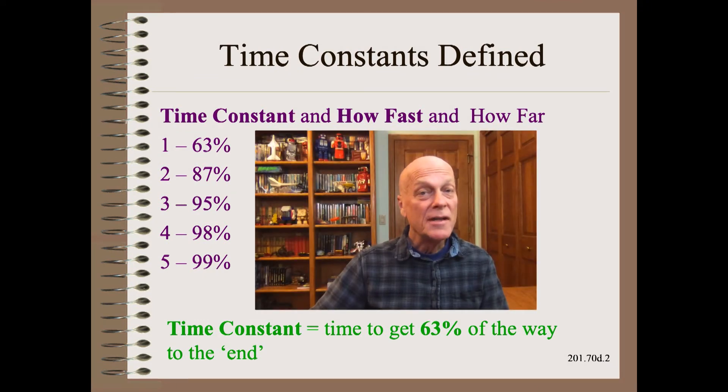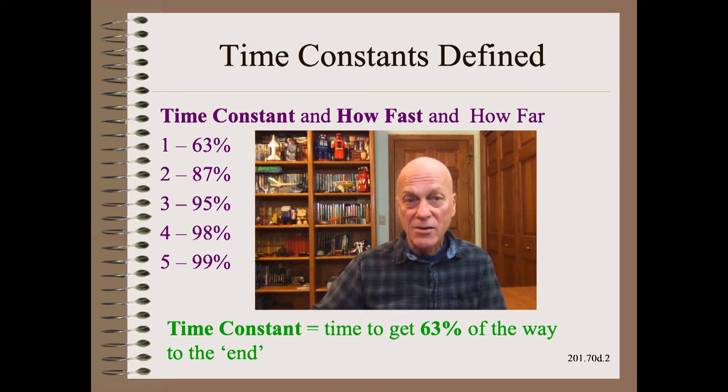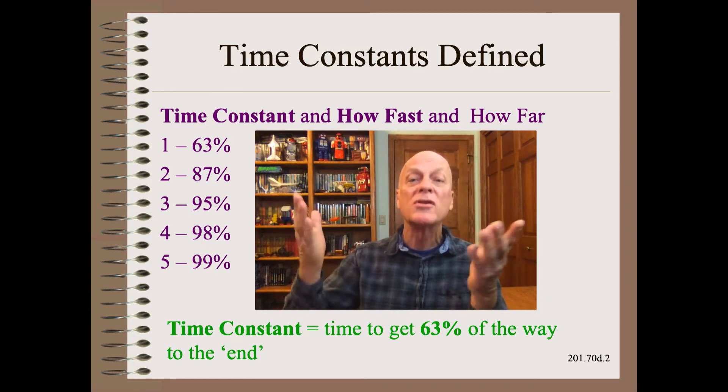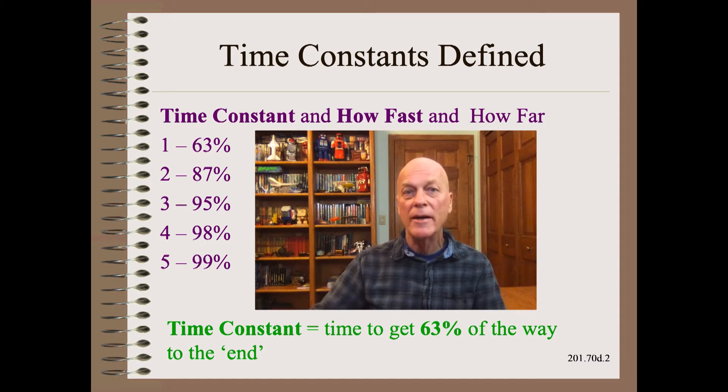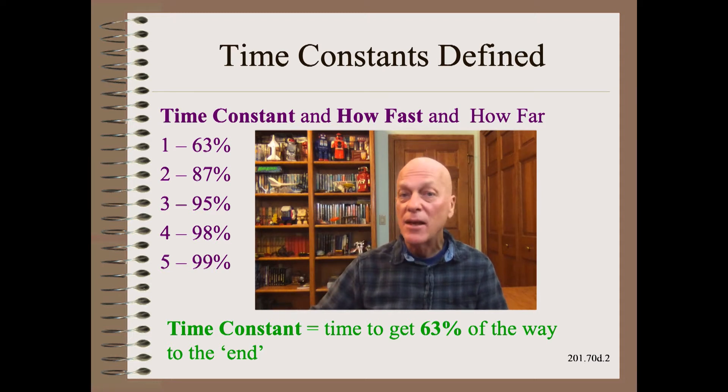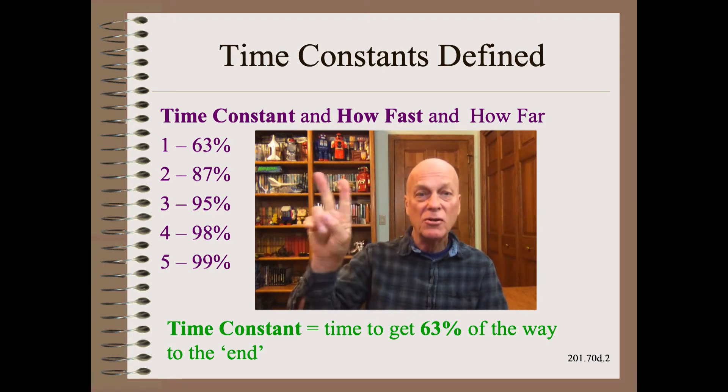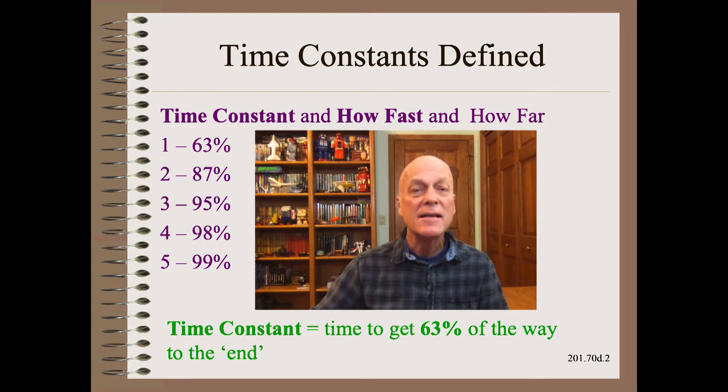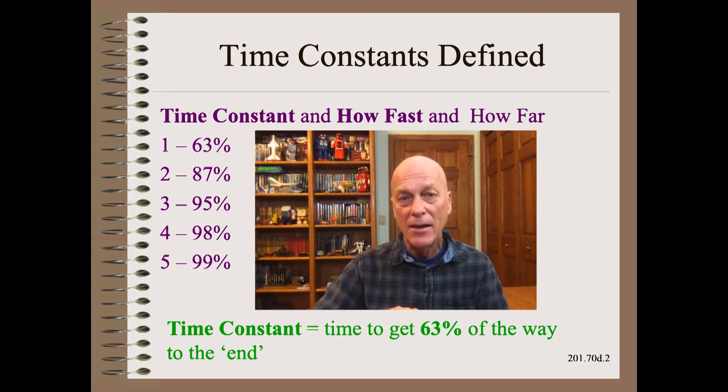Scientists use the time constant of a system as a great way to describe how long it takes to get most of the way to where it is going, given sufficient time. One time constant, most of the way, is 63%. After two time constants, the system is 87% of the way and after four time constants, the system is pretty much there at 98% of the way.